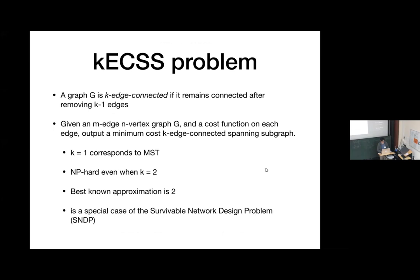So what is this problem? A graph G is K-connected if it remains connected after removing any K edges. Given a graph of n vertices and m edges and a cost function, we want to output the minimum cost K-connected spanning subgraph. This problem generalizes the minimum spanning tree problem when you use K equal to 1.